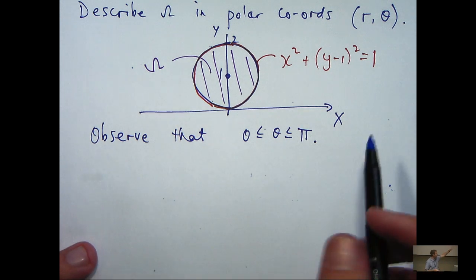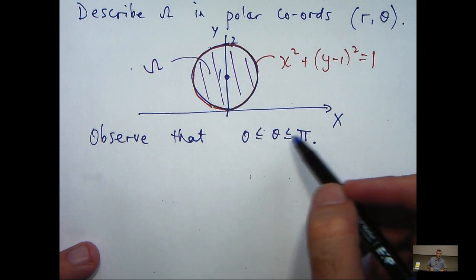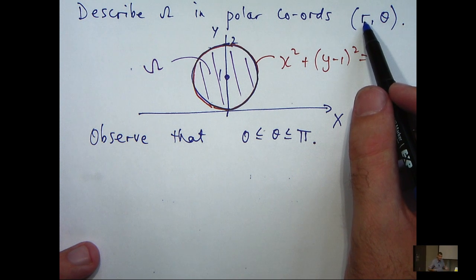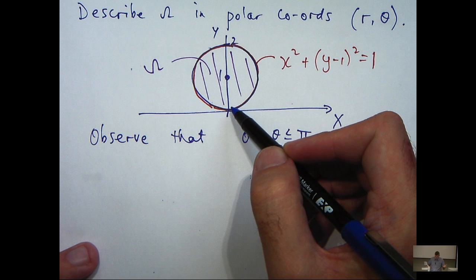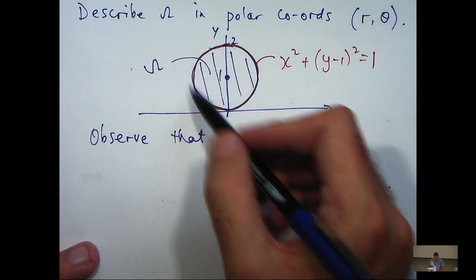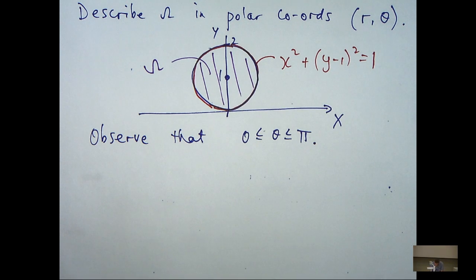Now, the more challenging upper and lower bounds involve the r. Obviously, r has to be greater than or equal to 0, but the upper bound on r is tricky. Some of you may look at this and go, well, r is between 0 and 2. Not true.